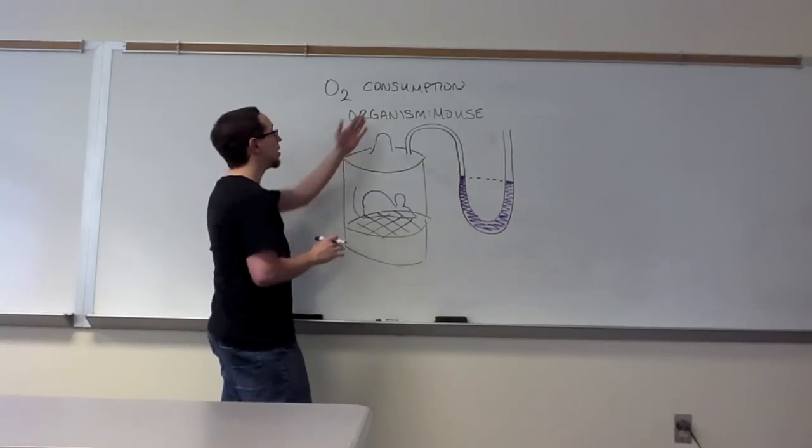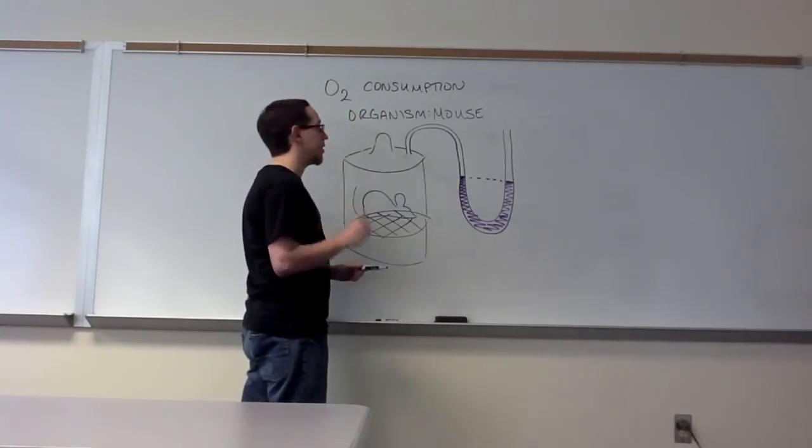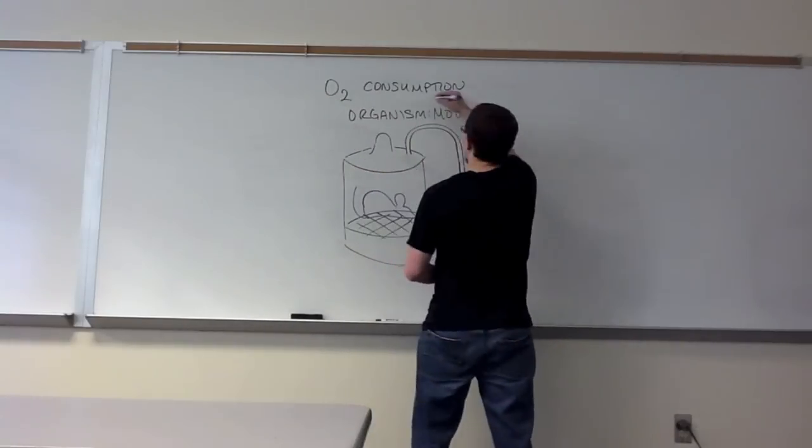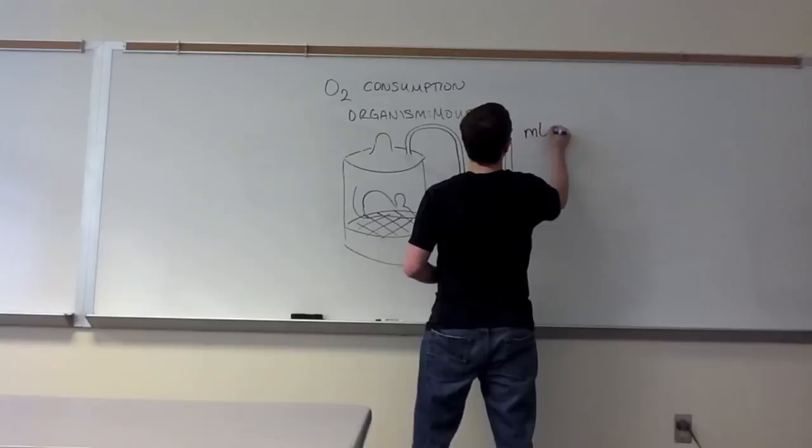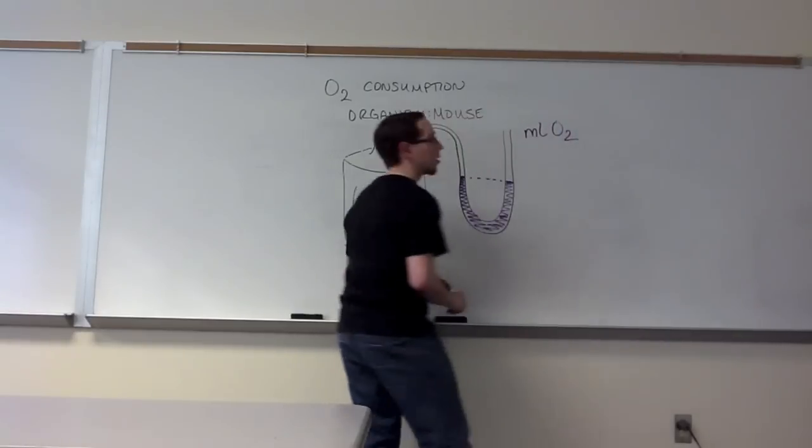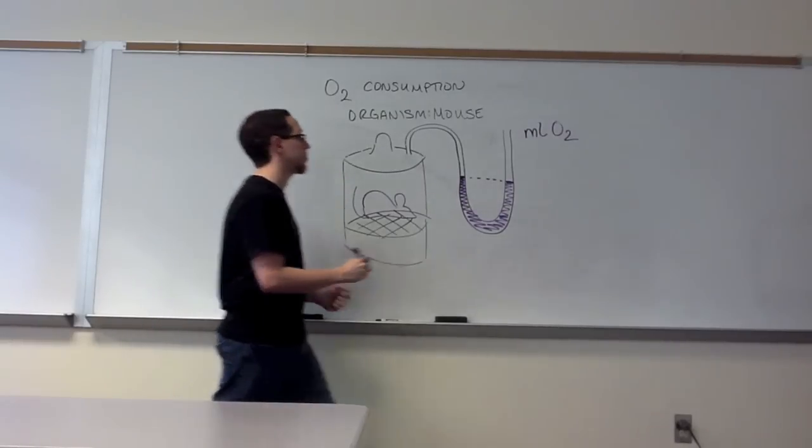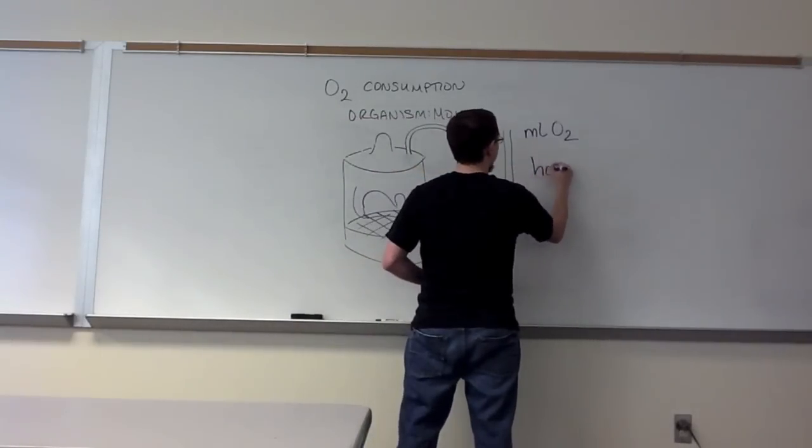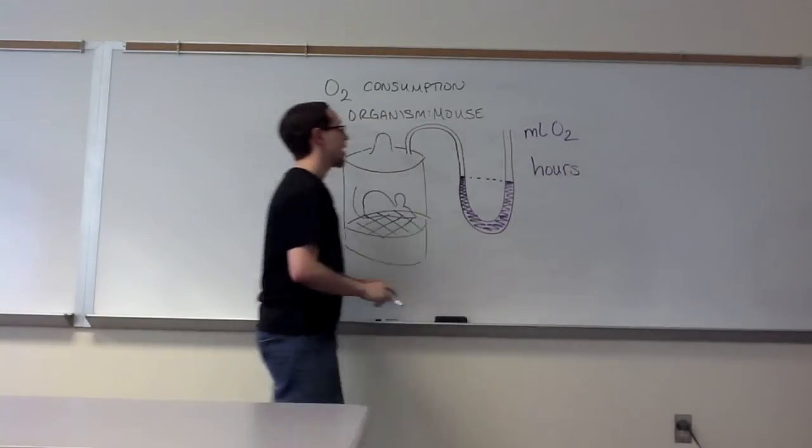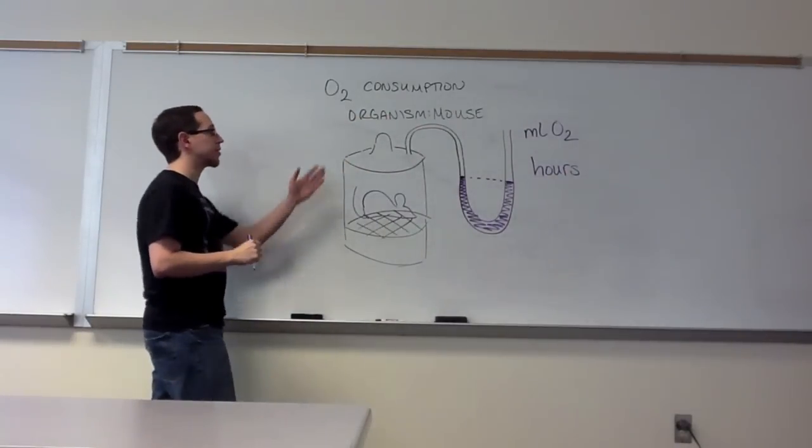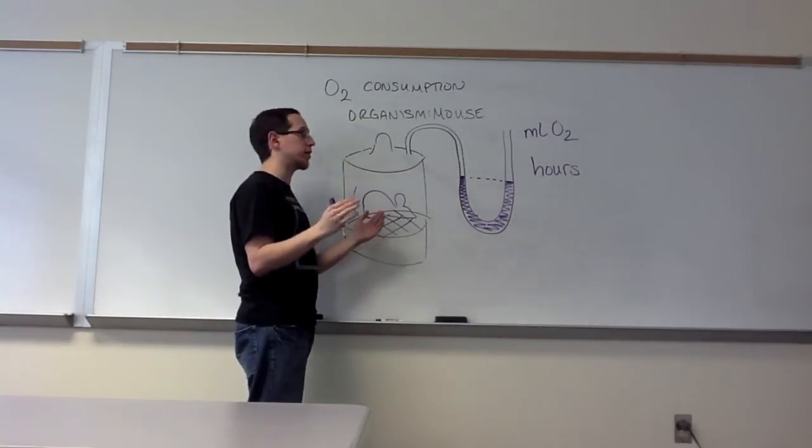The reason we're doing all of this is to measure metabolic rate, we need three things. We first need the milliliters of oxygen consumed. If it's a rate, that tells us we're going to need time as a measurement as well. So we're going to need the amount of hours. And finally, if we're going to compare this metabolic rate between organisms.